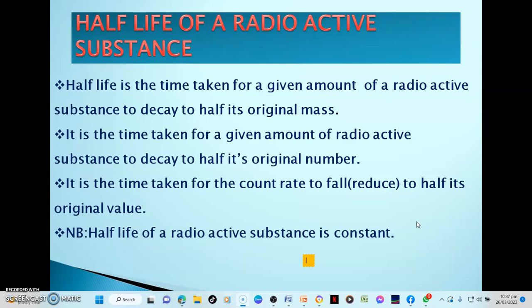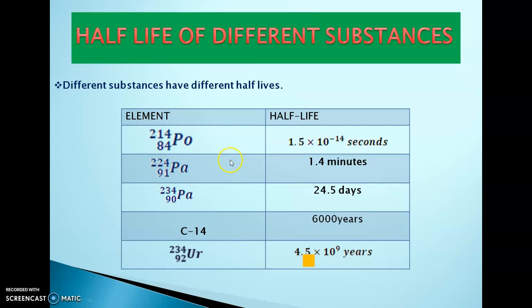Let's look at a few examples of elements and their half-lives. We have polonium here, which has a half-life of 1.5 times 10 to the power of negative four seconds. Then we have protactinium, which actually decays in 1.4 minutes. Then carbon-14, half of it decays within 6,000 years. And then we have uranium, which actually decays in 4.5 times 10 to the power of 9 years. What you need to learn from this table is that each and every radioactive substance has its own half-life — they have different half-lives.